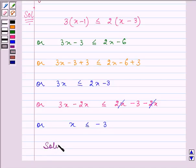So, the solution set is equal to: since it is less than or equal to -3, minus 3 is included, and from the negative infinity side, it will be an open interval.